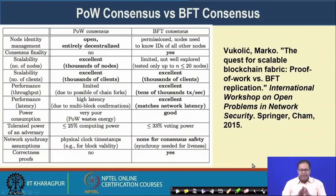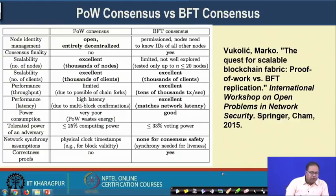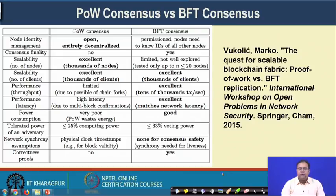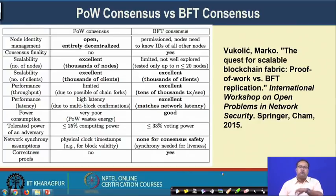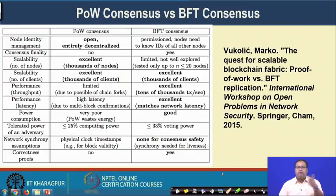Vukolic also gives a nice comparison between Proof of Work and BFT-based consensus under multiple parameters. In terms of node identity management, Proof of Work is open and entirely decentralized — anyone can join and nodes do not need to reveal their identity. BFT consensus protocols are applied in a permissioned environment because they rely on message-passing architecture — every node's identity, such as its IP address, must be available to others.